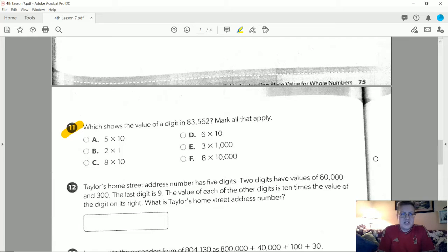Number 11, which shows the value of a digit? Let's start with our largest digit. The 8 is in the ten thousands place and is equal to 8 times ten thousand, so that would match letter F. My next digit is in the thousands place and would be 3 times 1000, that matches letter E.